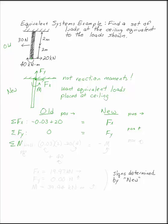If I take the sum of moments, you may take the sum of moments anywhere you'd like, but a convenient place would be at the wall. In my old system, I have 0.03 kilonewtons acting at 2 meters, which tends to spin the wall clockwise.